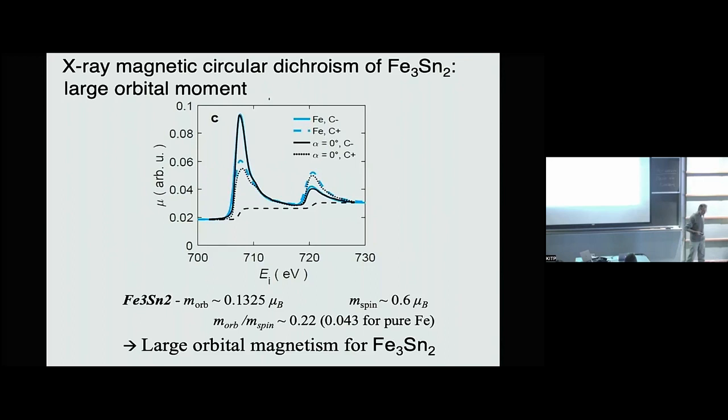In fact, in the Kagome compound the ratio of the orbital to the spin moment is 0.22 — 22%. This is to be compared with 0.043 for pure iron. So iron 3Sn2 has more orbital moment than iron does, which is actually very good for topology. It makes us feel well that we have a good basis for the Dzyaloshinskii-Moriya interactions and for all of the interactions required to open up various gaps in the electronic band structure.